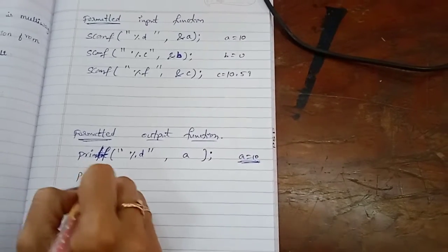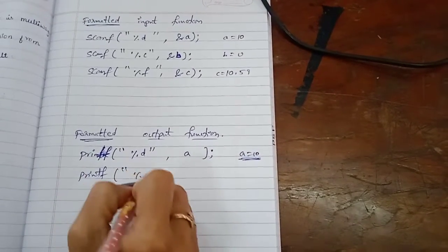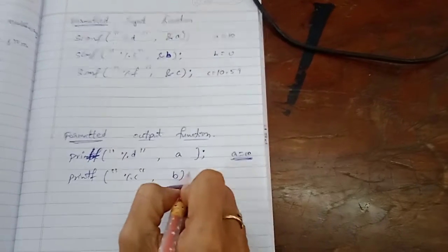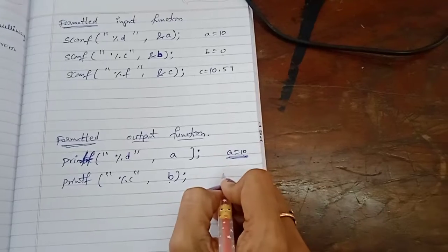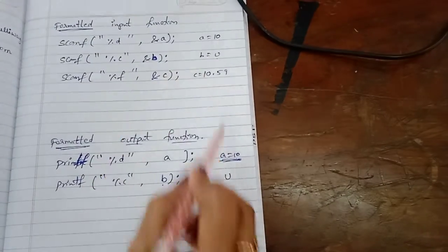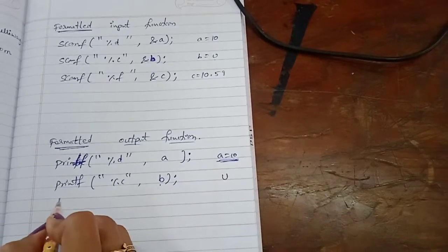Same as suppose if you want to print the character %c already which has been inputted, the variable name is B. So same variable we should use. That means here it will print U. That is the variable B contains character U.